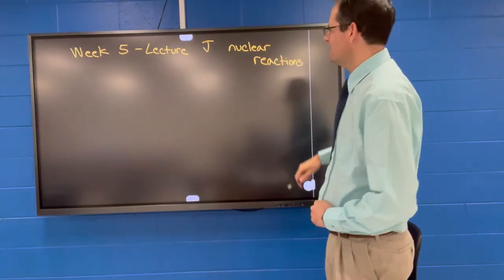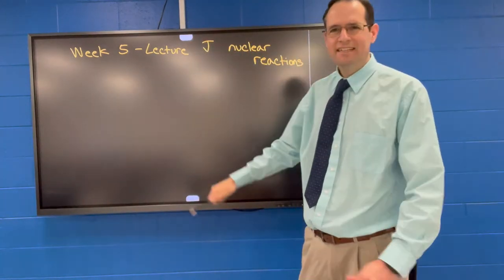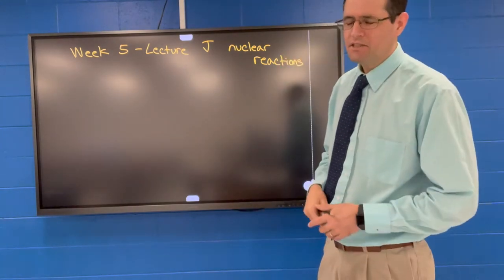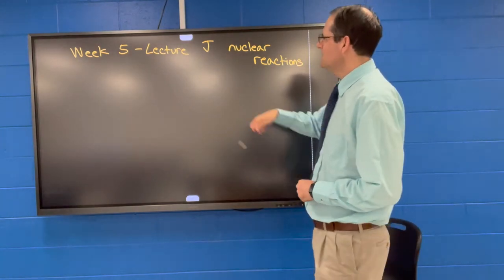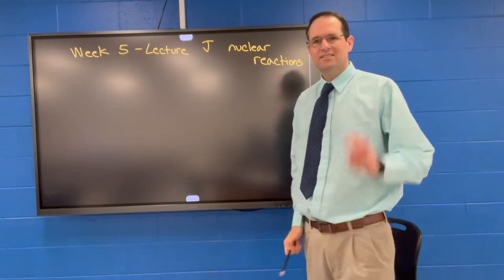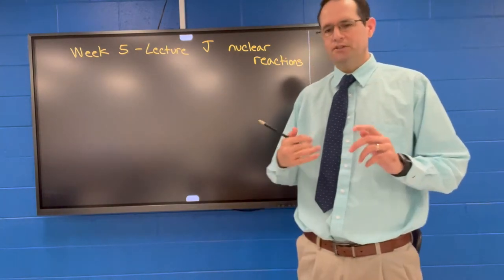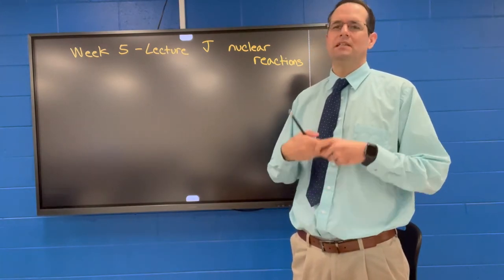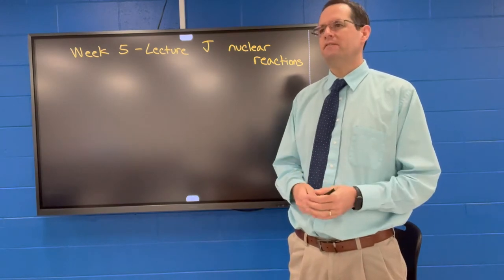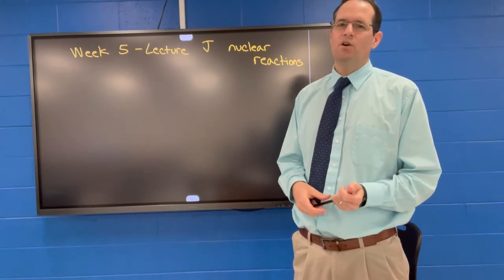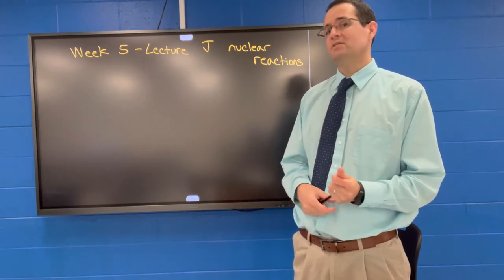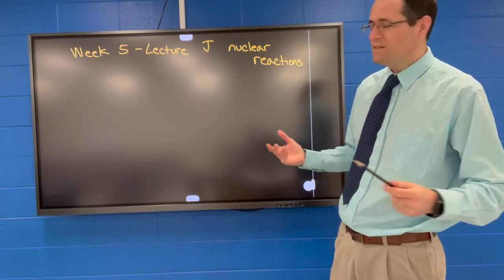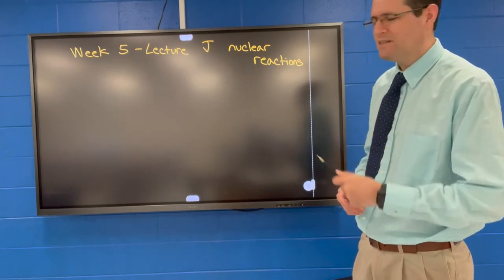Welcome back to another week, another lecture in chemistry. This is week five, lecture J, and it's the second lecture on nuclear reactions. We've already introduced alpha decay, beta decay, gamma decay, and positron emission. These are types of radiation emitted from radioisotopes or radionucleotides that are unstable atoms and they decay to produce other things.